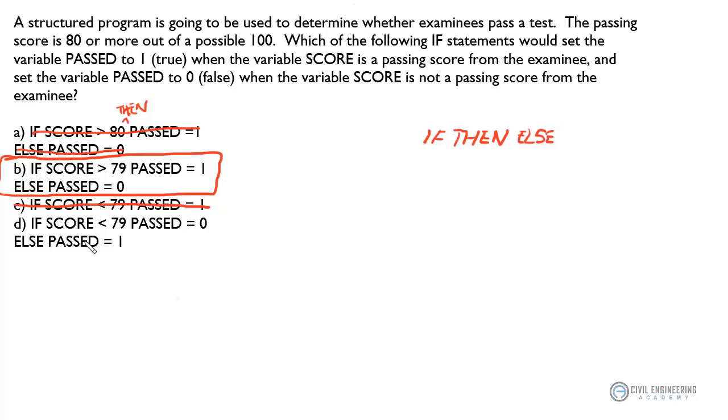And answer D looks like we'll never give the correct response when the variable SCORE is equal to 79. It's almost the same problem we had up on answer A. So that one is not the right answer. So answer B gets us the logic that we're after.